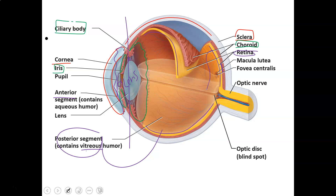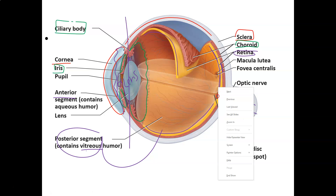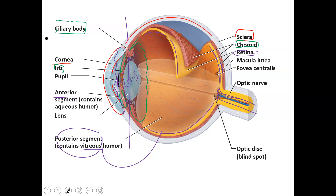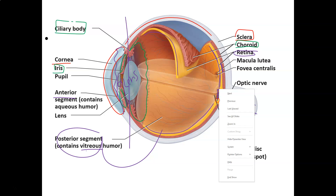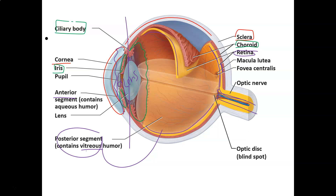All the rods and cones have axons that merge together to make the optic nerve, which takes visual information to the brain for processing. There's a place at the back of the eye where all those axons emerge, and there are no rods and cones there. This is your anatomical blind spot — any light hitting that area can't be seen, and your brain fills it in with what it thinks should be there.